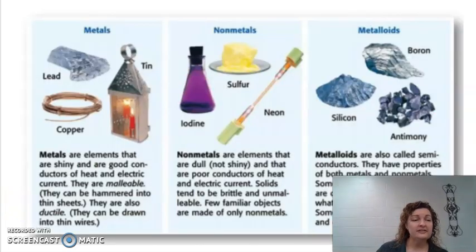The next thing is our classification of metal, non-metals and metalloids. So let's talk about each one individually. Metals are elements that are shiny and good conductors of heat and electricity. They are malleable, which means they can be hammered into a thin sheet. They are also ductile, which means that they can be drawn into a wire. And here's some good examples of metals. We guys already know metals, but lead, copper, tin, gold, silver, platinum, all of that.